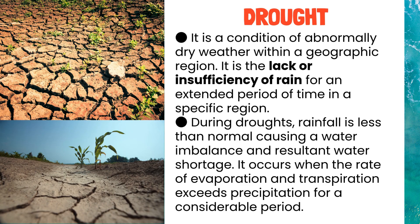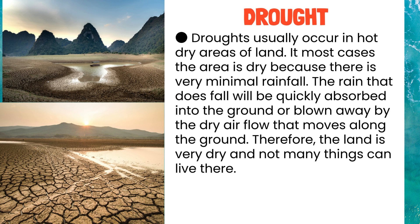Floods are also caused by heavy snow melting. Drought: It is a condition of abnormally dry weather within a geographic region. It is the lack or insufficiency of rain for an extended period of time in a specific region. During droughts, rainfall is less than normal causing a water imbalance and resultant water shortage. It occurs when the rate of evaporation and transpiration exceeds precipitation for a considerable period. Droughts usually occur in hot dry areas of land where there is very minimal rainfall. The rain that does fall will be quickly absorbed into the ground or blown away by the dry airflow, leaving the land very dry and unable to support much life.